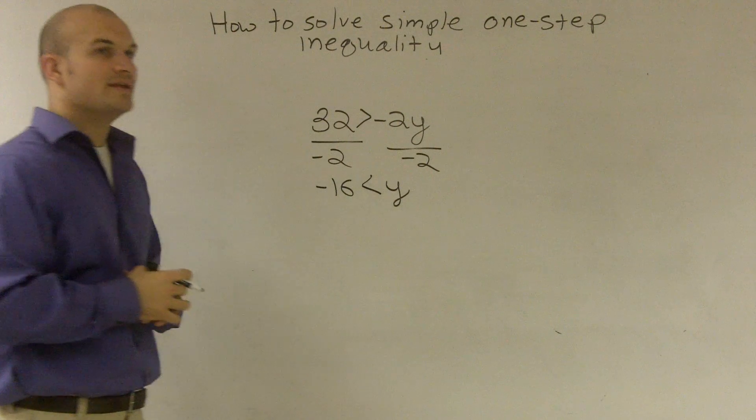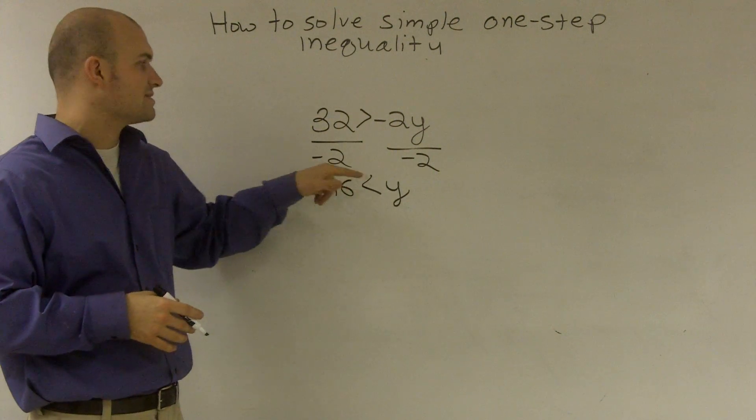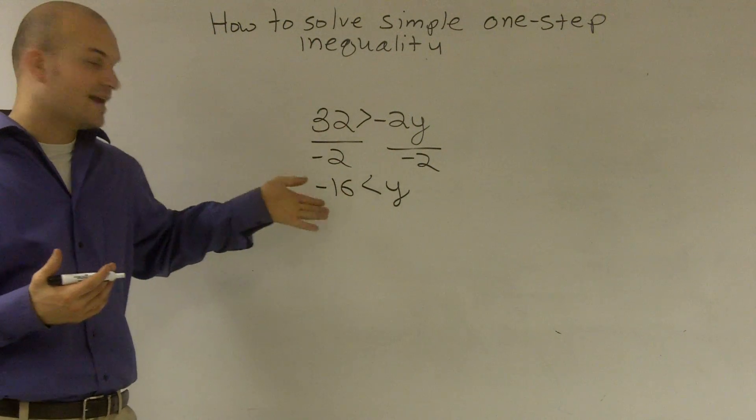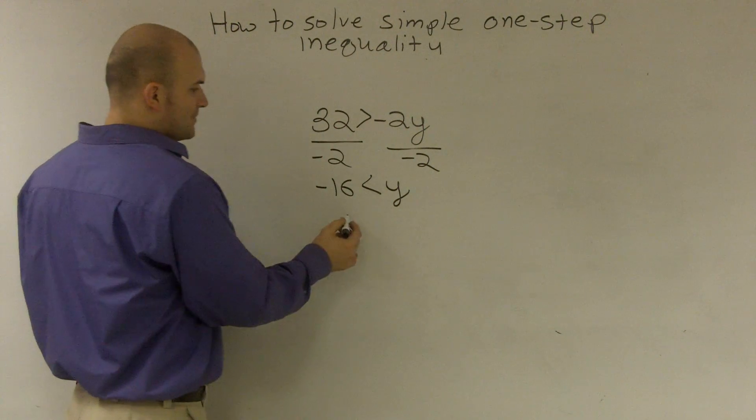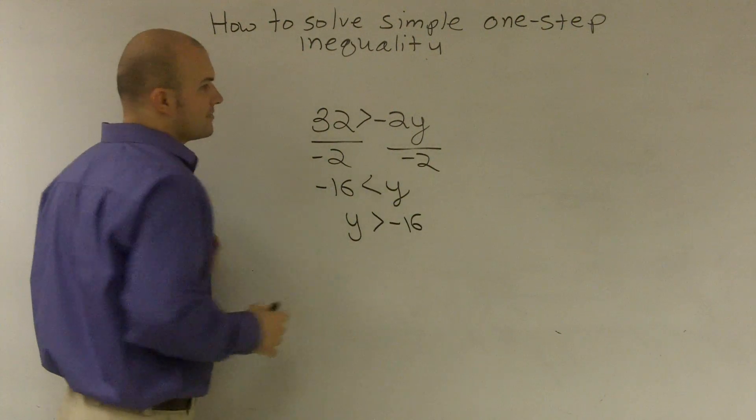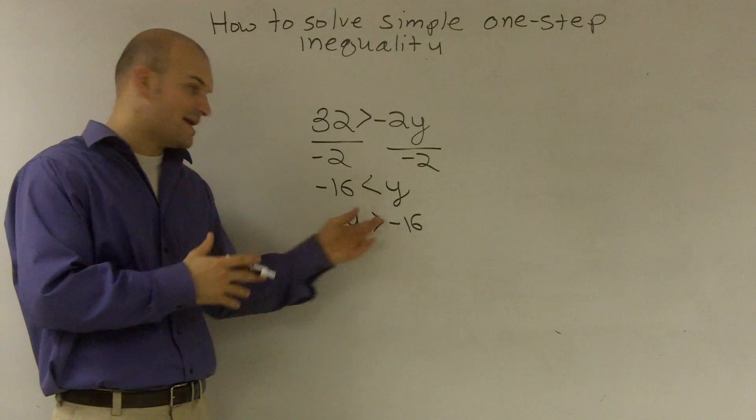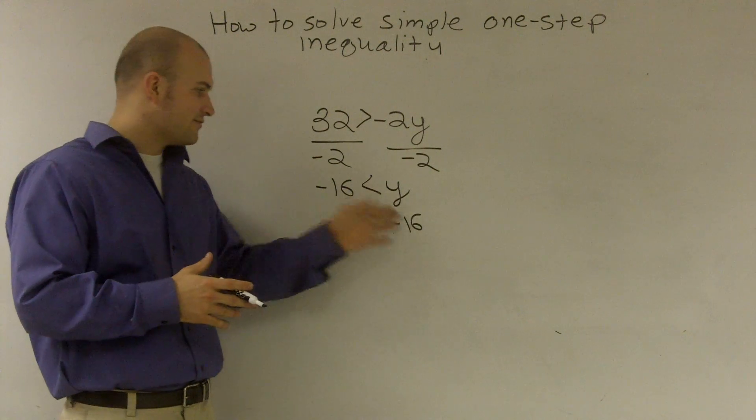Now, the next thing that I think is very confusing that a lot of students will do is they'll leave their answer like this: negative 16 is less than y. Well, we know that if negative 16 is less than y, that's the same thing as writing y is greater than negative 16. So it's always going to be helpful if you can just get in the habit of making sure that your variable is always written first.